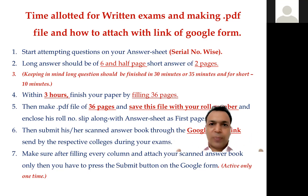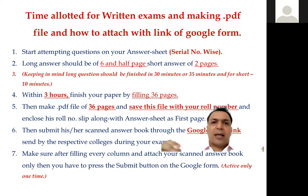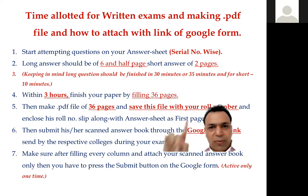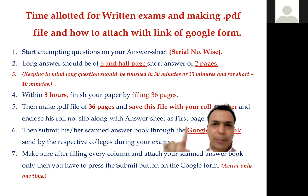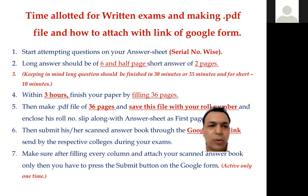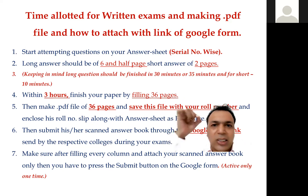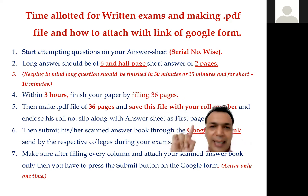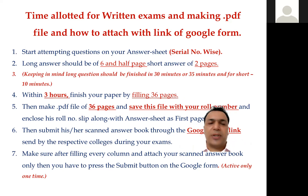Regarding the Google Form: your respective colleges will have created a group and sent you the answer booklet link. As soon as your first paper starts — which is on 3rd September, the first paper being Childhood and Growing Up — you have to start attempting the paper on your answer sheet. Remember, you have to attempt in serial number order.